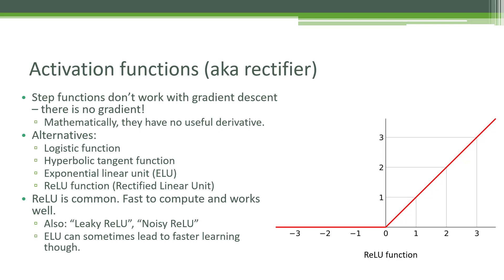Like we talked about way back in lecture one, using a step function is what people did originally, but that doesn't really work with gradient descent because there is no gradient there. If it's a step function, there is no slope — it's either on or off, either straight across or up and down. There's no useful derivative there at all.